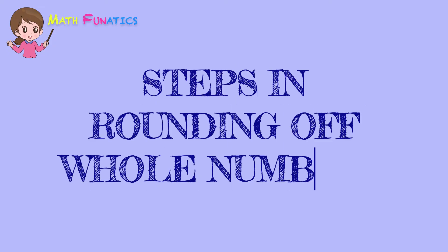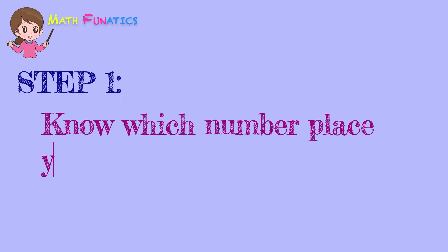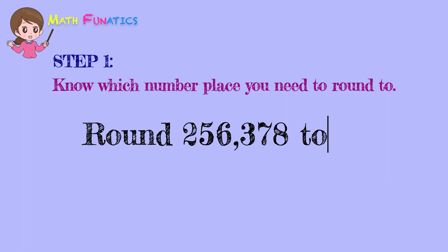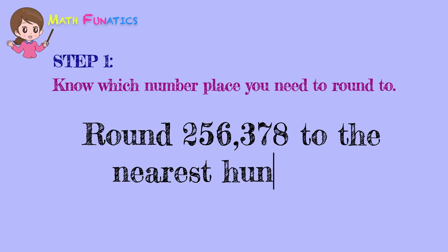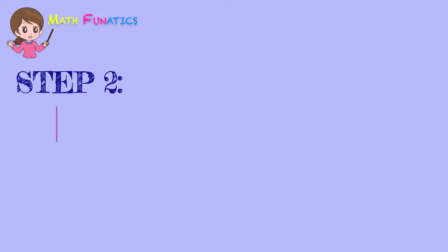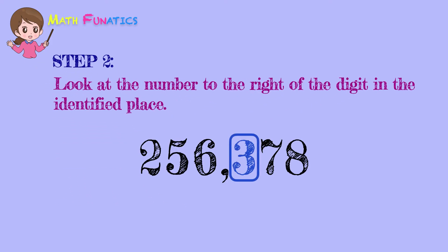Let's have the proper steps in rounding off whole numbers. Step 1: Know which number place you need to round to. Let's apply it with an example: Round 256,378 to the nearest hundreds. We mark the digit 3 since this number has to be rounded to the nearest hundreds. Step 2: Look at the number to the right of the digit in the identified place. In our example, the number to the right of the hundreds place is 7.